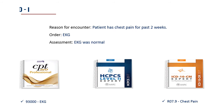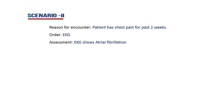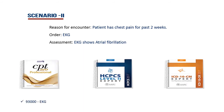Let's see one more example. The reason for encounter is the same — patient has chest pain for two weeks. The physician orders an EKG. In the final assessment, it is proved as atrial fibrillation. Atrial fibrillation is the responsible cause for the chest pain. So in this scenario we need to code the responsible condition: 93000 for EKG, no supply, and I48.91 for atrial fibrillation. Once a definitive diagnosis is found by the procedure, we need to code that definitive diagnosis — no need to code the symptom.